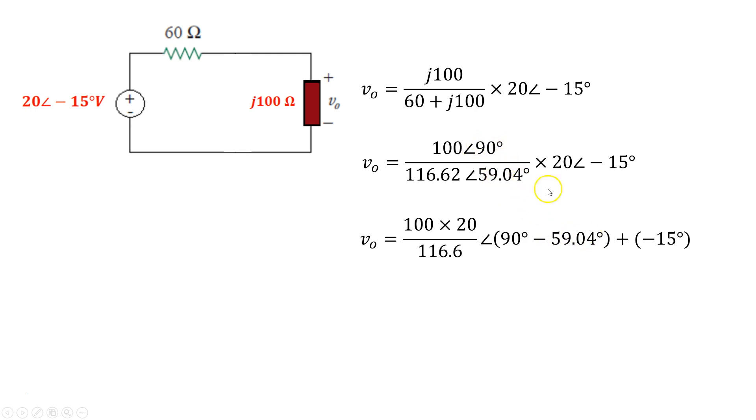90 degrees minus 59.04 because it's being divided. Two complex numbers are dividing each other. And to that we add negative 15 degrees. So overall, what I get is V0 is 17.15 angle 15.96 degrees volts.